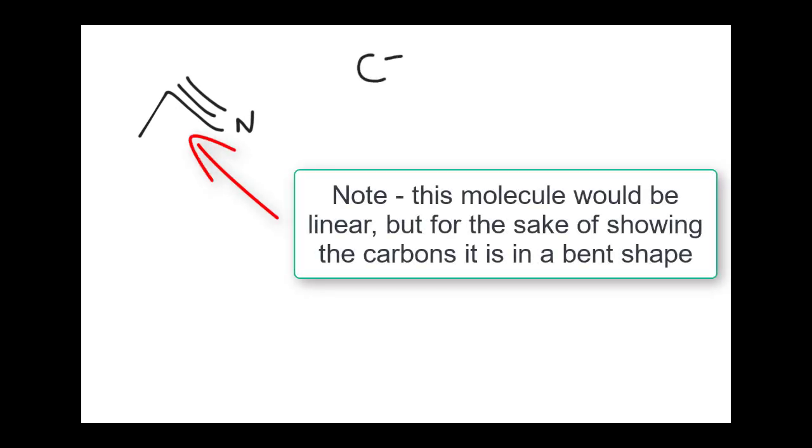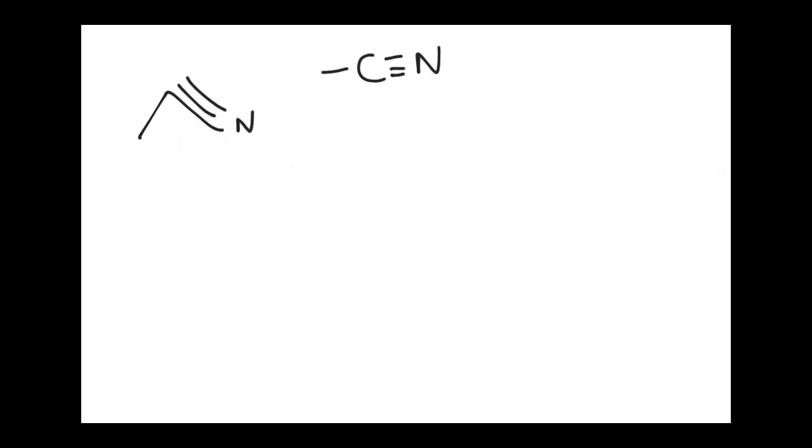So for example, if I had a nitrile and the nitrile group itself is a C triple bond N, in this case I have a carbon attached to it. So this is a two carbon chain, one, two. So this is an ethane nitrile.